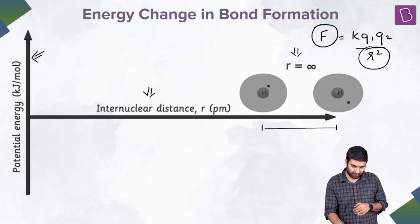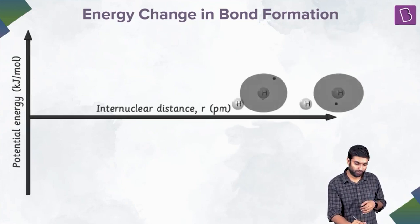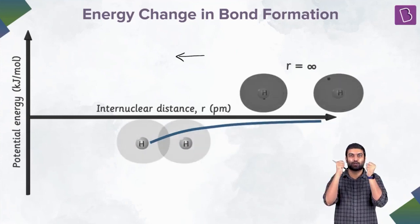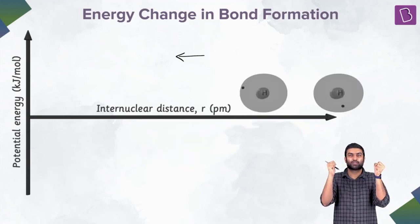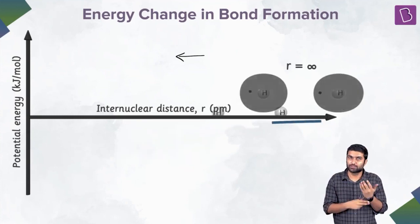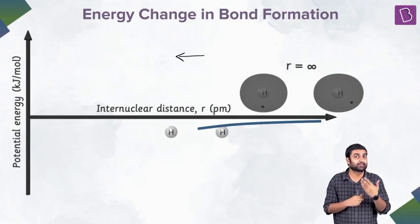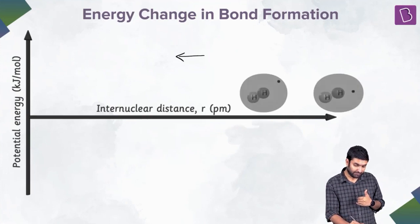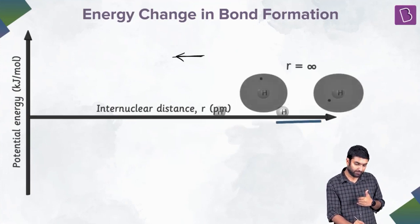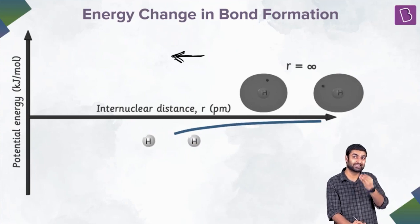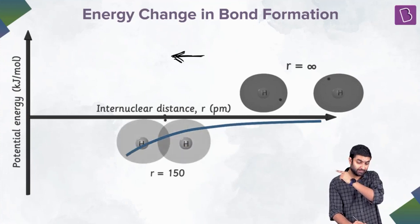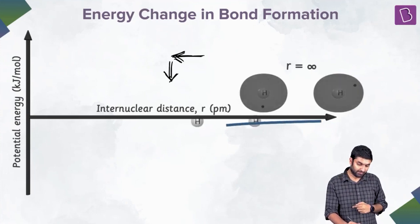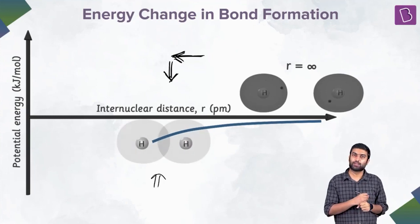Think about a ball coming down — potential energy decreases. We are moving towards the left on the x-axis as the nuclei come closer. They give in to the attraction, and as a result potential energy reduces. You can see that as the distance decreases, the potential energy goes down, which is why we have this curve here.